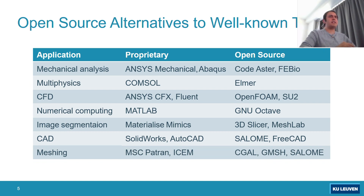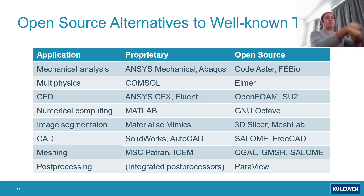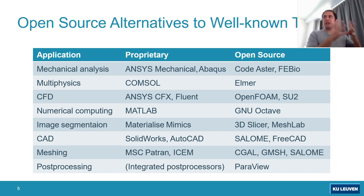For meshing, MSC Patran is famous, as is ICEM for CFD, but in open source there are lots of different libraries and tools for generating mesh files. For post-processing, most proprietary tools have their own integrated post-processors, but in open source we have the famous ParaView software, which is also used by users of proprietary software programs.